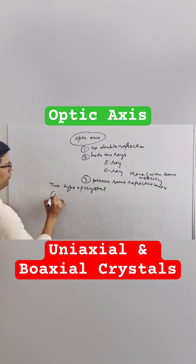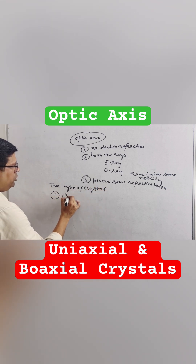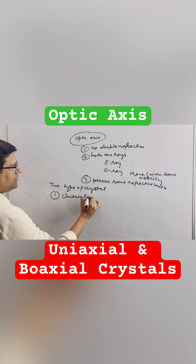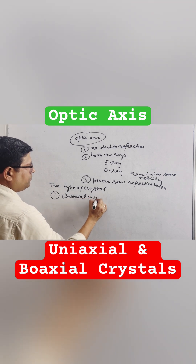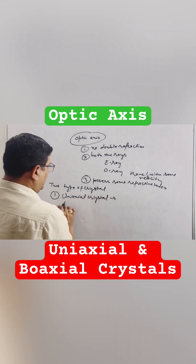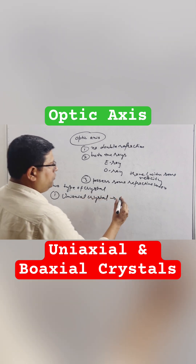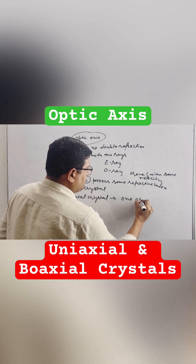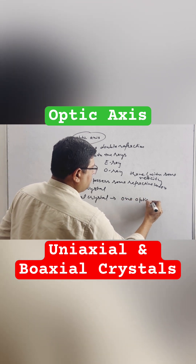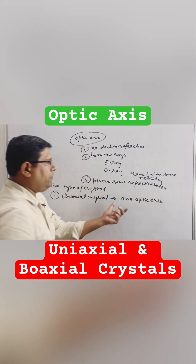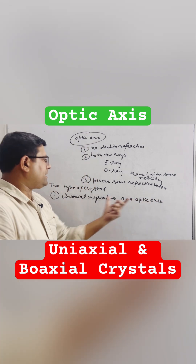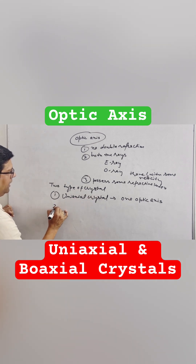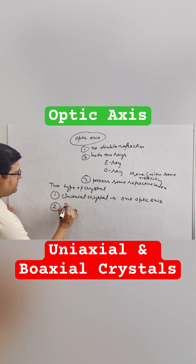Number one: uniaxial. Uniaxial crystals are those crystals which have one optic axis. Crystals having one optic axis direction are called uniaxial crystals, and those with two are called biaxial crystals.